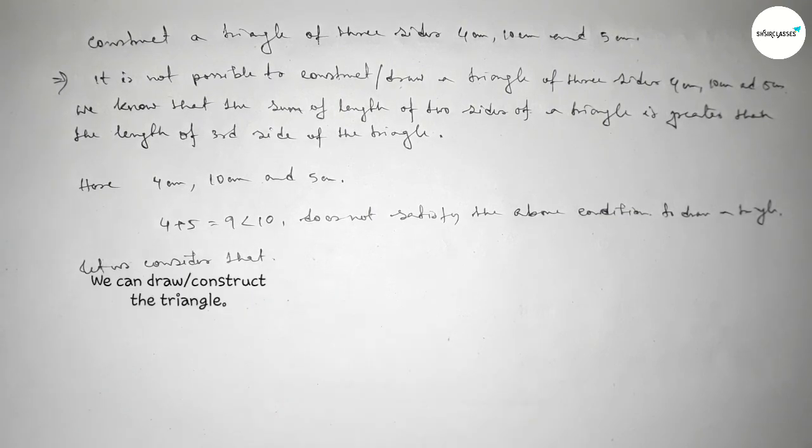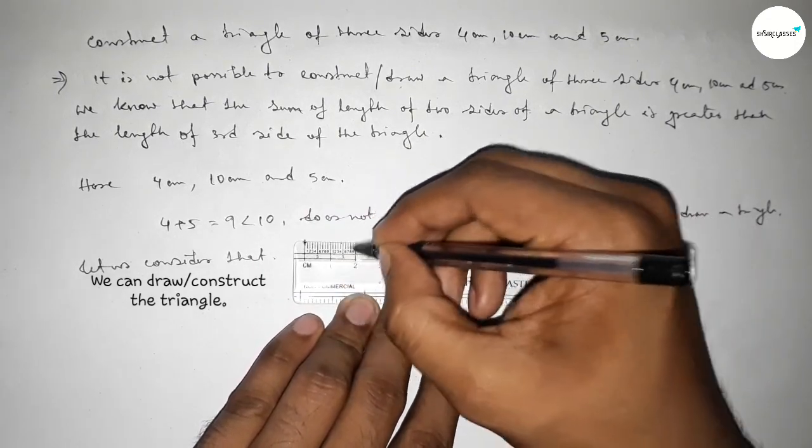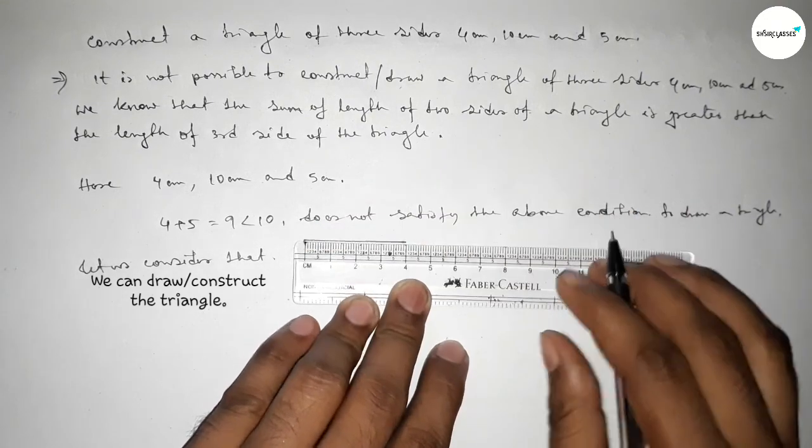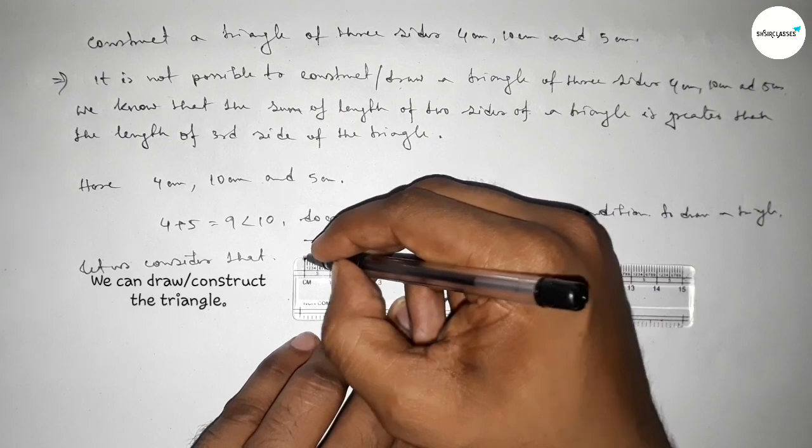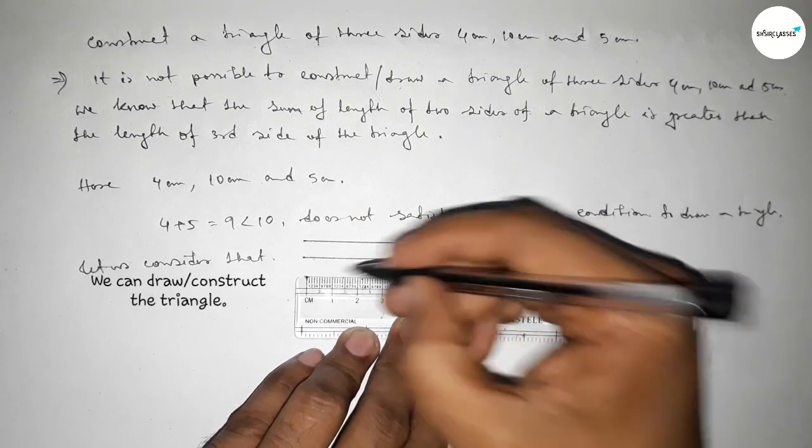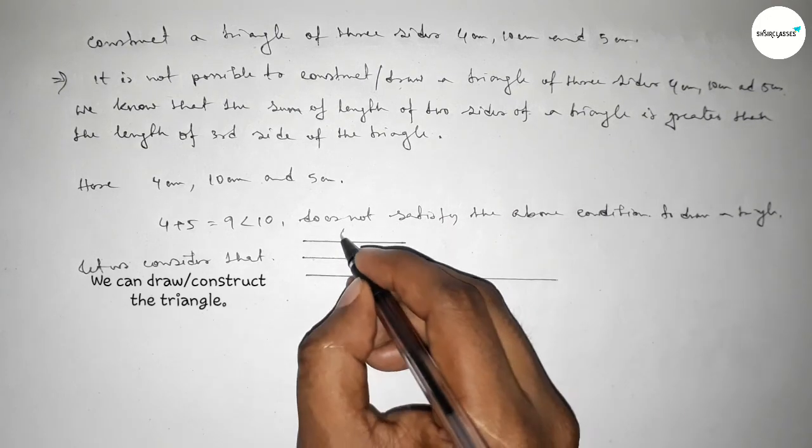Now let us assume that we can construct or draw the triangle. So first drawing the three sides: 4 centimeter first, then drawing a line of length 5 centimeter, then drawing a line of length 10 centimeter.